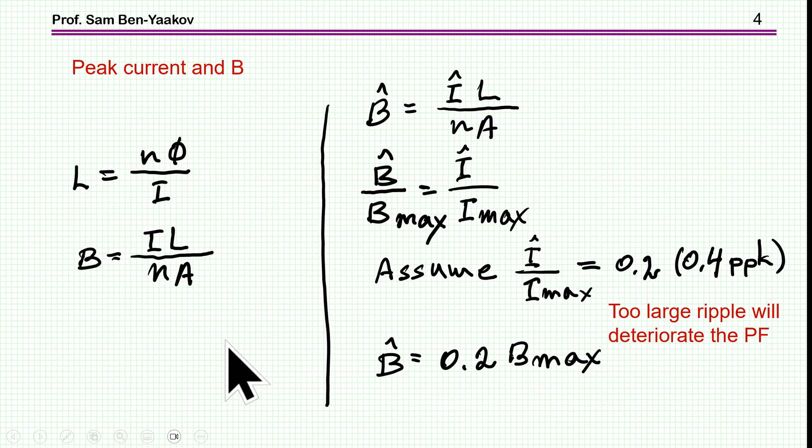Let's talk about the relationship between the current and the magnetic flux density. I'm starting with the definition of inductance, which is N times phi flux divided by the current. From which we get that the magnetic flux density B equals the current times the inductance divided by N number of turns and A cross-sectional area of the core. Therefore, the ripple ΔB is related to the ripple of the current. We have to assume a certain level of ripple of current, and I'm setting it here in this example to 0.2.